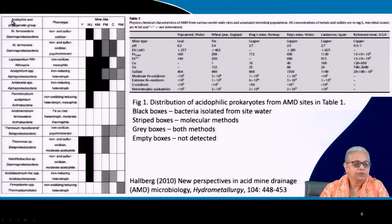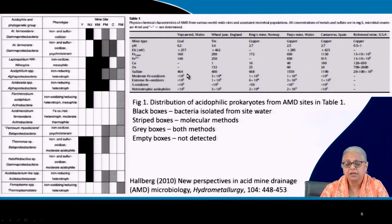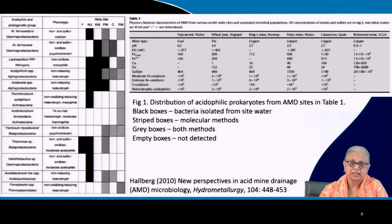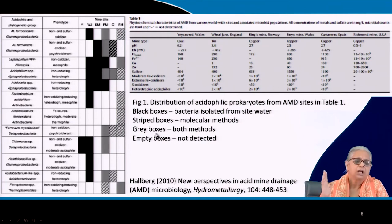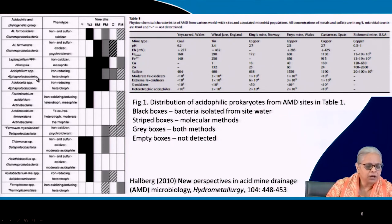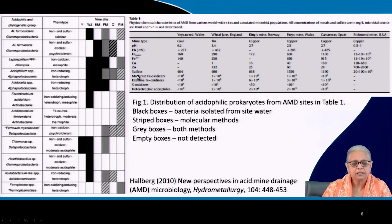A long list of acidophilic bacteria has been identified in acid mine drainage at various sites around the world — most in Wales, one in Spain, one in the US. Black boxes indicate bacteria isolated from the site itself, striped boxes indicate identification by molecular methods, grey boxes indicate both approaches, and empty boxes indicate no detection of those microorganisms. The table lists their concentrations.